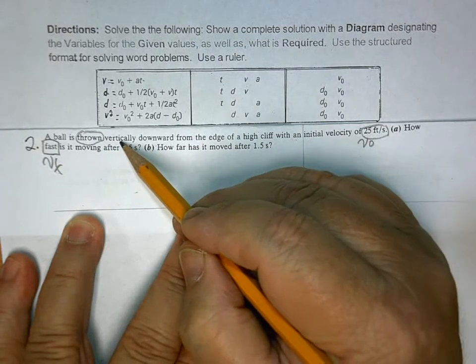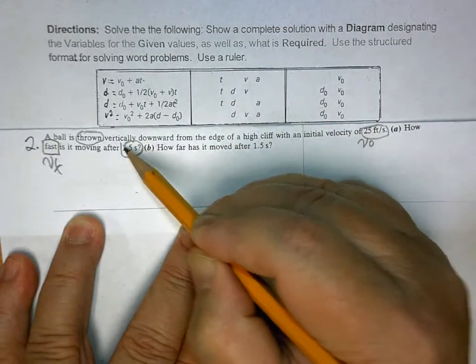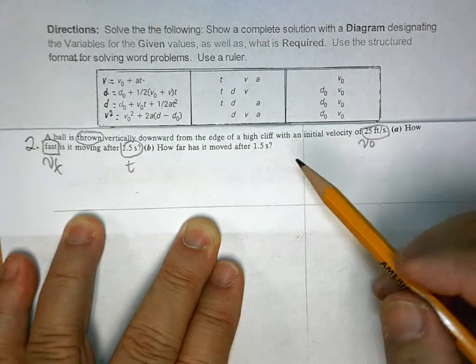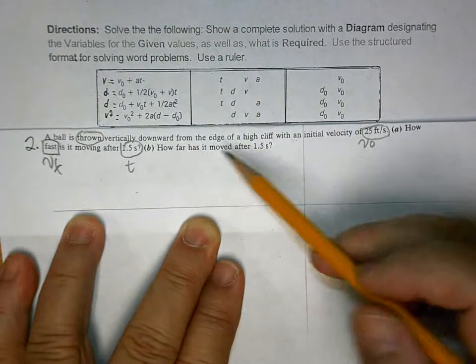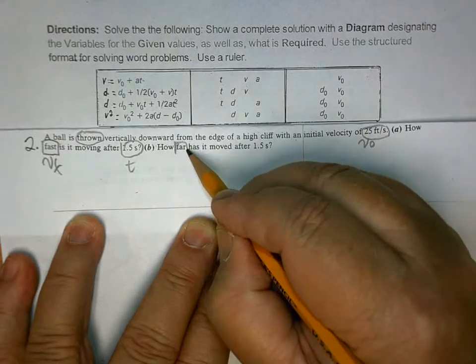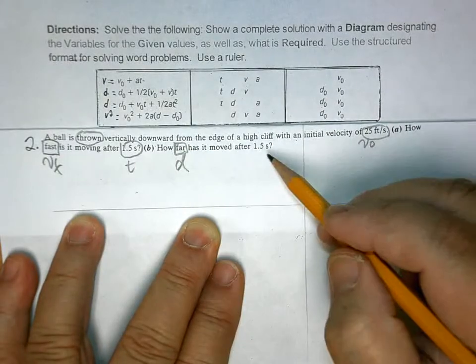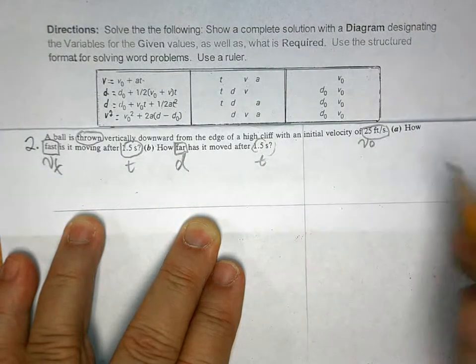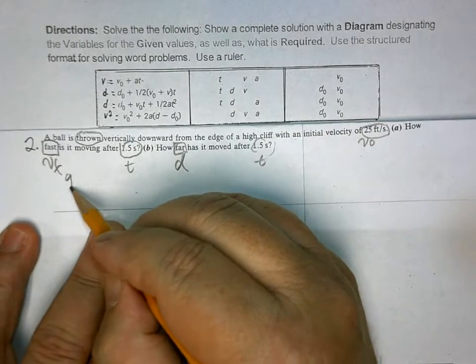At a given T. This is T, right? And how far? So, D. At a given, luckily it's the same one, T. So, given.